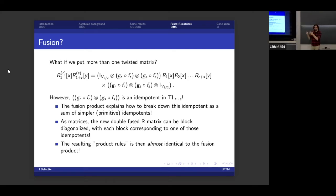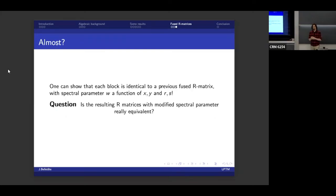So what this means is that as matrices, this new double fused R matrix, you can block diagonalize it, where every block corresponds to one of those idempotents, and more particularly to one of those fused R matrices with a different spin. So there's some sort of product rules that you can define on these fused R matrices by simply putting two of them in the same transformation. And what you can probably tell is that this resulting product is almost identical to the fusion product. And the almost here is important, actually.